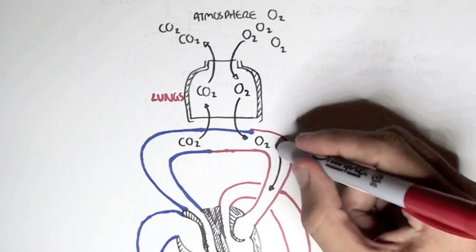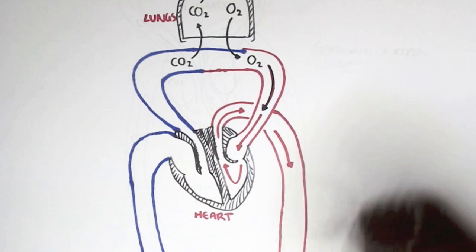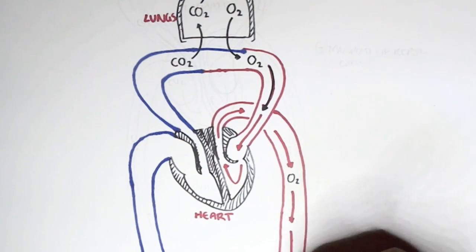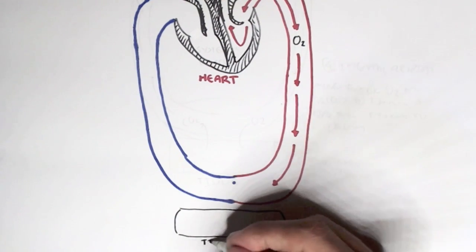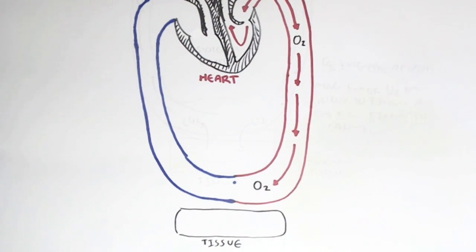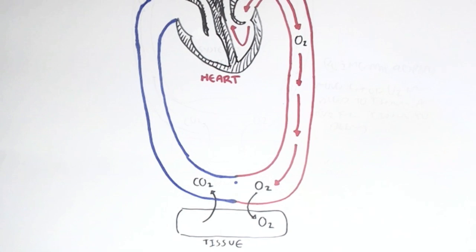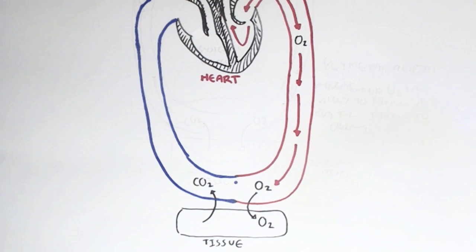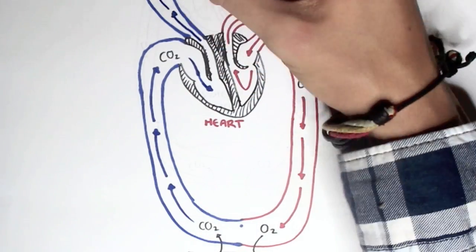Oxygen will then travel through our body and enter our heart. The heart will then pump out the oxygen and transport it throughout to different organs and different tissues. The different tissues will take in oxygen and use it to make energy in the form of ATP. And as a byproduct, it will create carbon dioxide. So the tissues will then release carbon dioxide, and the blood vessel transports the carbon dioxide back to the heart, so the heart can pump it up to the lungs to be exchanged for oxygen.